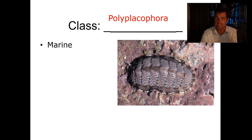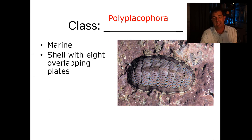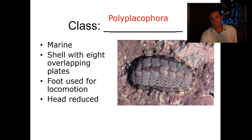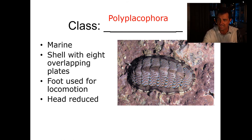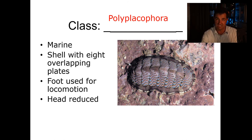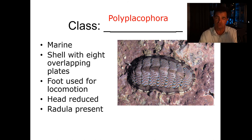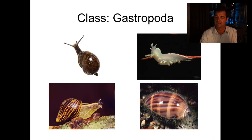The Polyplacophora are all marine and easily identified by their eight overlapping plates. They have a foot for locomotion and a reduced head. The common name for these animals is chitons. They also have a radula, which they use mainly for scraping algae off rocks as they move.